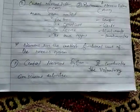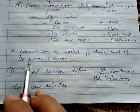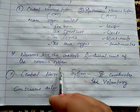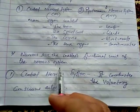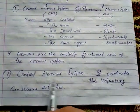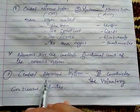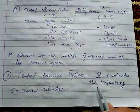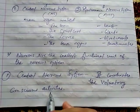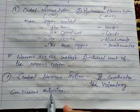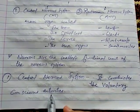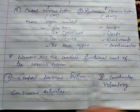One important point is that neurons are the smallest functional unit of the nervous system. The central nervous system coordinates voluntary, conscious activities — meaning it coordinates all the actions which are under our control.